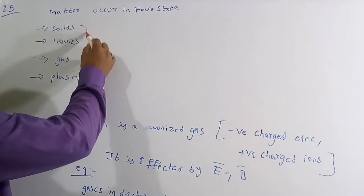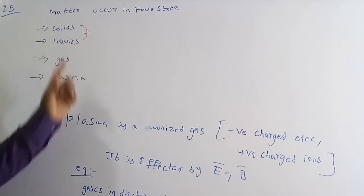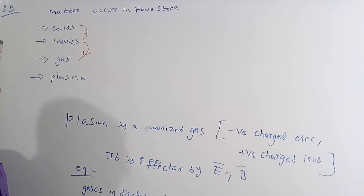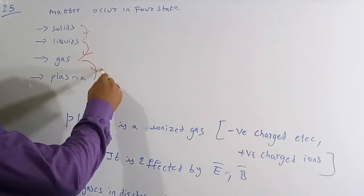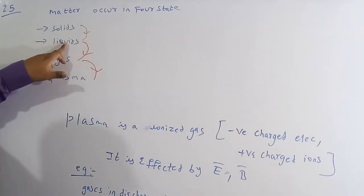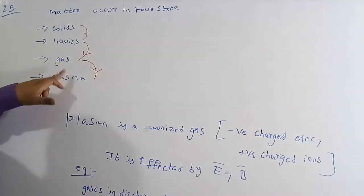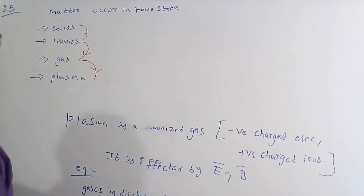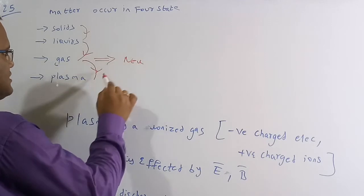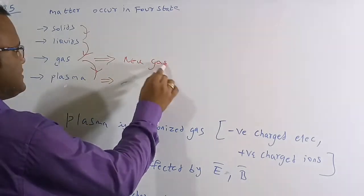If you heat solids, they convert to liquids. If you heat liquids, they change to gas. And if you heat the gas, you get plasma. So the third state — gas — is a neutral gas, but plasma is an electrically charged gas.